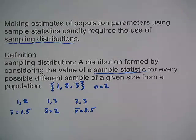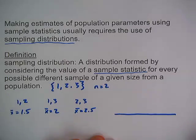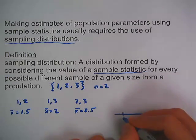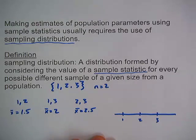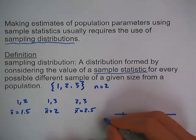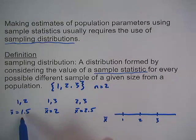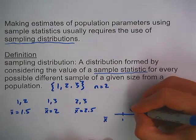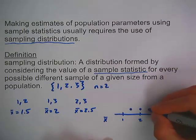If we put that into a distribution using a dot plot, the x-bar axis represents all of the sample means. We'd have a dot at 1.5, a dot at 2, and a dot at 2.5. This dot plot represents the sampling distribution of the sample mean.